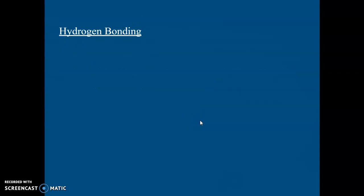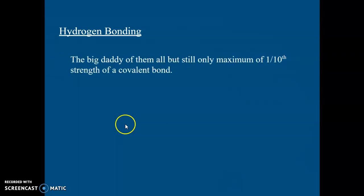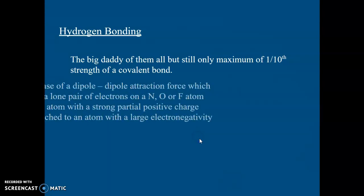Finally, the strongest of them all, hydrogen bonding. Now, hydrogen bonding is found between molecules that contain a hydrogen atom. But that hydrogen atom must be attached to a nitrogen, oxygen, or fluorine. These are the three atoms with the biggest electronegativities. So, must be attached to a nitrogen, an oxygen, or a fluorine. Now, it's the strongest, but it's still only about a tenth of the strength of covalent bond.